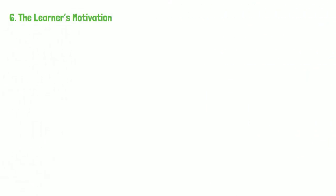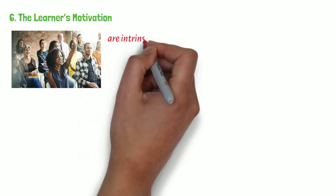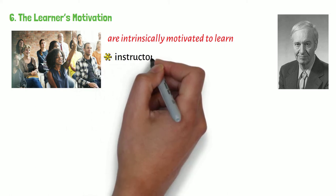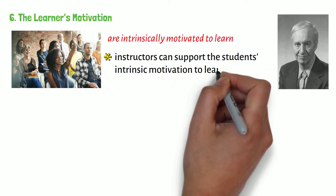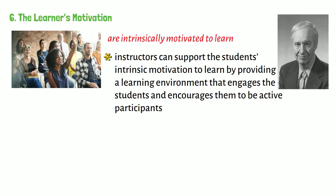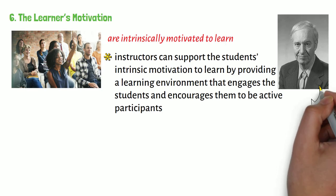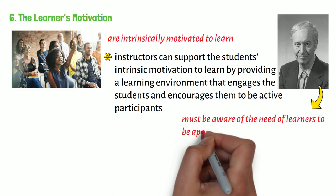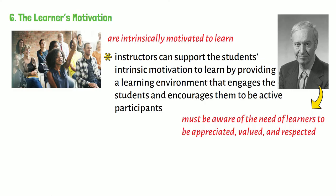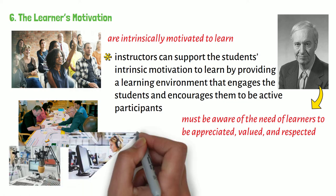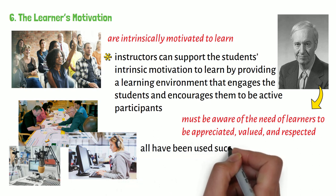Sixth, the learner's motivation. The sixth assumption in Knowles's adult learning theory is that adult learners are intrinsically motivated to learn. For this reason, according to Knowles, instructors can support the student's intrinsic motivation by providing a learning environment that engages students and encourages them to be active participants. To create a positive learning environment for adults, as Knowles suggests, instructors must be aware of the need of learners to be appreciated, valued, and respected. Using games, for example, or simulating a radio talk show to include guests, or using multimedia when appropriate, all have been used successfully to enhance student motivation.